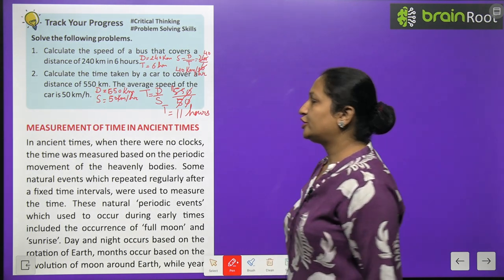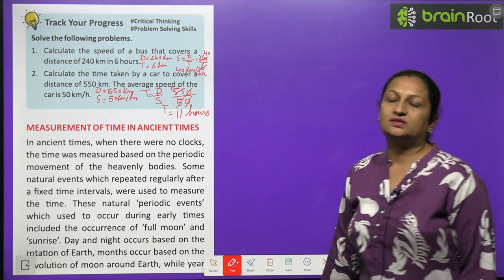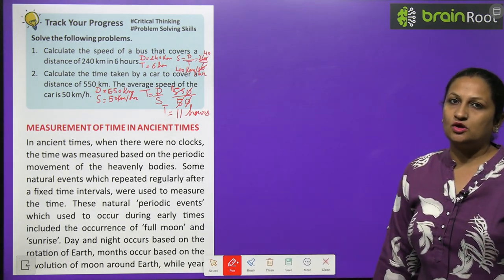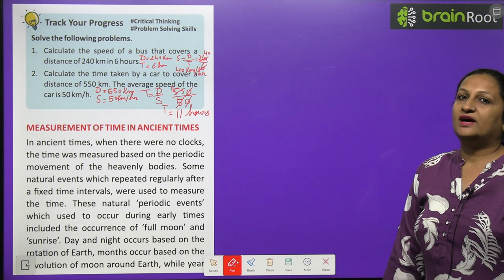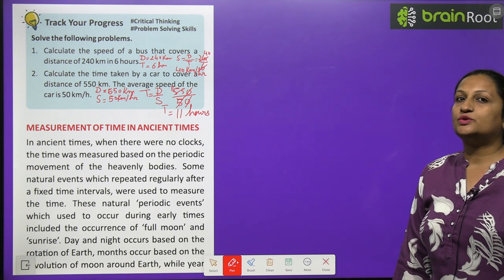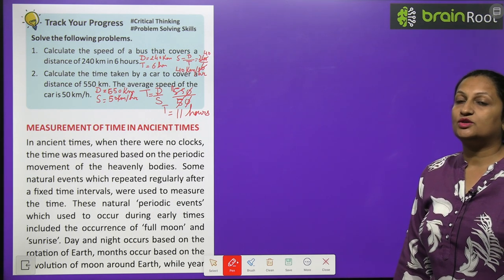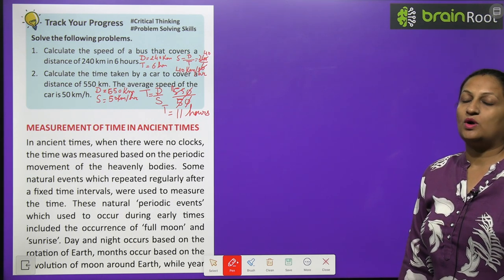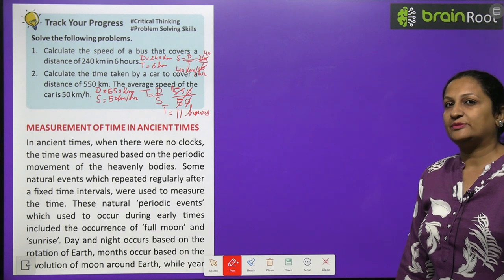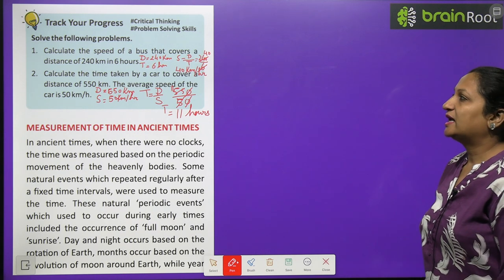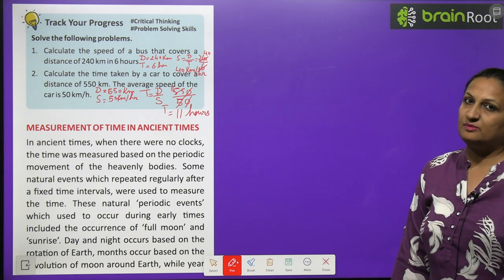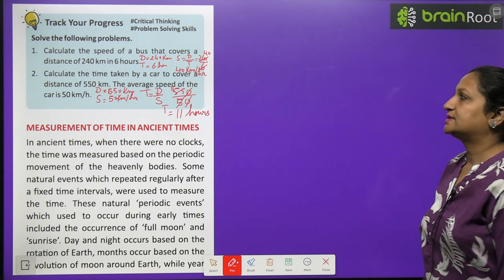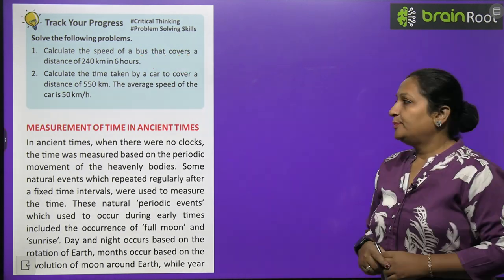You can also convert this time into seconds. 1 hour is equal to 3600 seconds, so you can multiply 11 by 3600 to get the time in seconds.